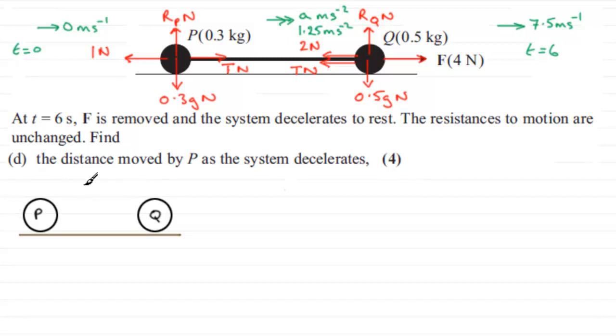So, we know that when T equals 6, both particles, because they're joined together, are moving at 7.5 metres per second. So we'll just pop that in there, 7.5 metres per second. And F is removed and the particles are now going to slow down and come to rest.